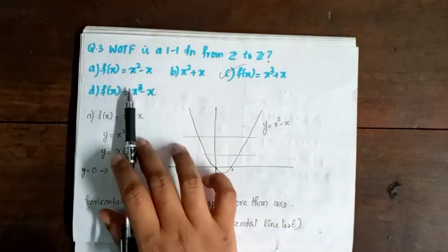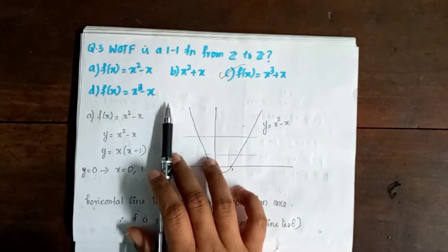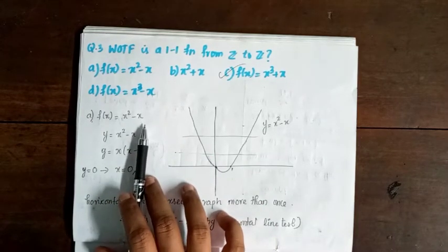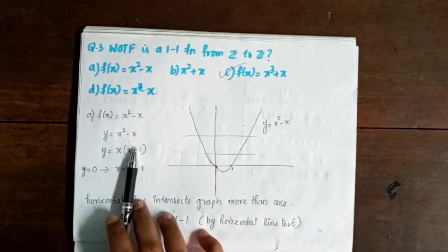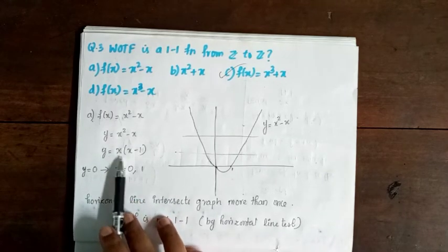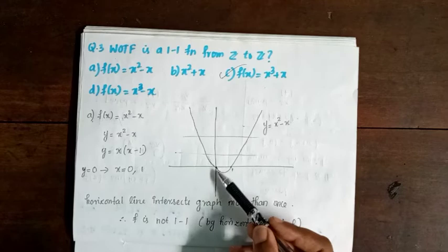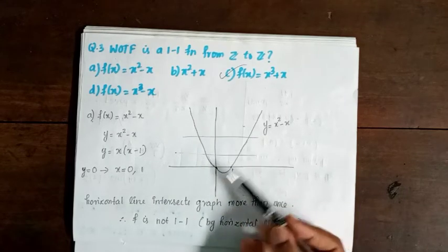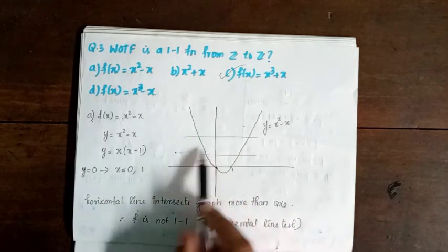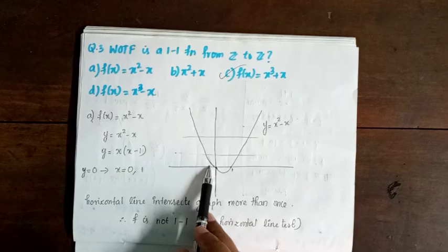Question 3: Which of the following is a 1-1 function from Z to Z? We check the options. The first option is f(x) = x² - x + 1. By the horizontal line test, this function is not a 1-1 function.